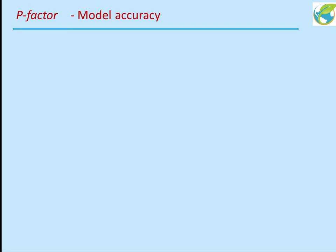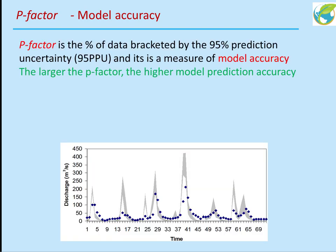One of them is P-factor, which represents model accuracy. P-factor is a percentage of data bracketed by the 95% prediction uncertainty and it is a measure of model accuracy. The larger the P-factor, the higher the model prediction accuracy. By P-factor we are talking about all the points that fall within the 95% PPU.